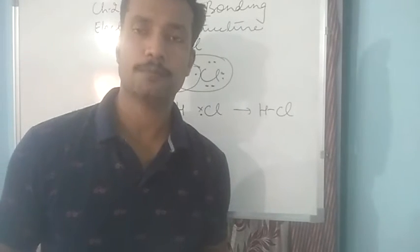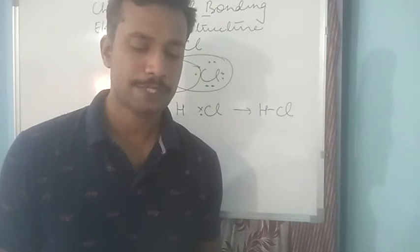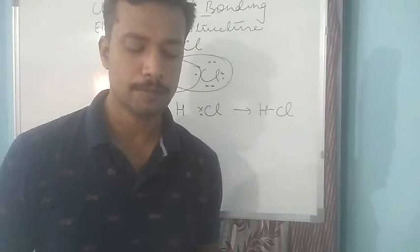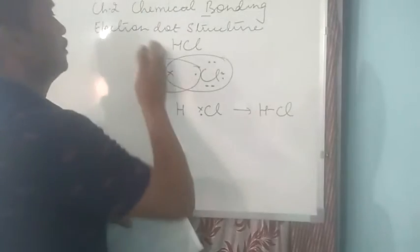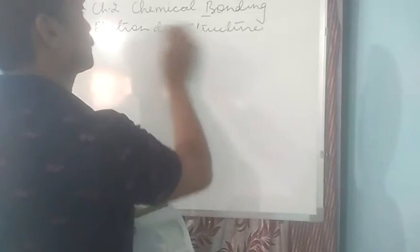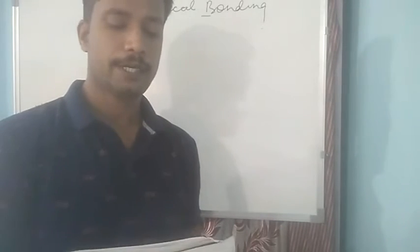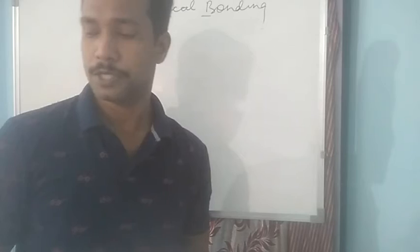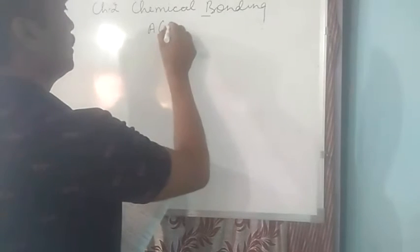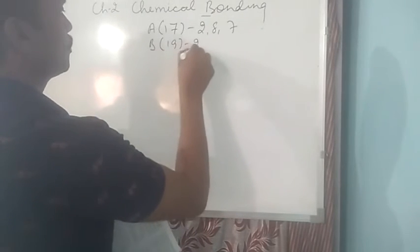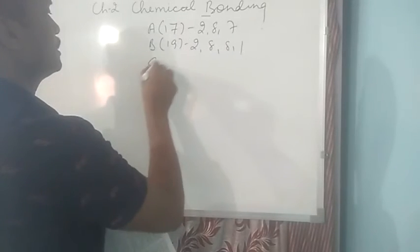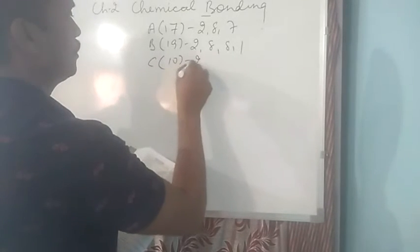First is question number 2. Elements A, B and C have atomic numbers 17, 19 and 10 respectively. Now you have to state which one is a non-metal, metal and chemically inert and write down the formula of the compound formed by 2 of the above elements. That means from this, the very first thing that you should do is to write the electronic configuration of each element given. Like element A has atomic number 17, electronic configuration is 2,8,7. B is 19, electronic configuration 2,8,8,1. And C is 10, it can be 2,8.